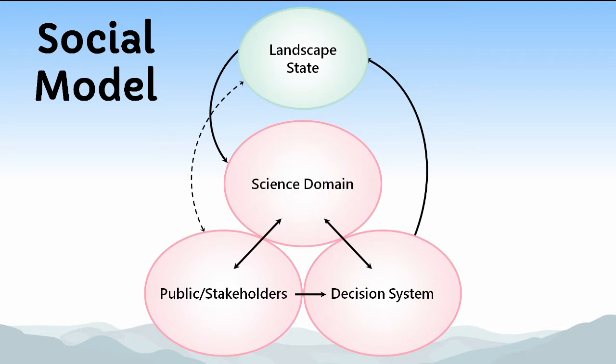The next domain is the realm of the public and stakeholders. This is where values, priorities, and concerns about biodiversity are determined, along with other societal objectives. Few people have direct first-hand information about the state of the landscape or the plight of individual species; they depend on conservation professionals to provide that information. But it's the public and stakeholders who determine what's important and what needs action. This information feeds back to scientists and feeds over to decision-makers as well. It's ultimately the public that both enables and constrains conservation.